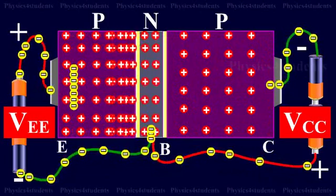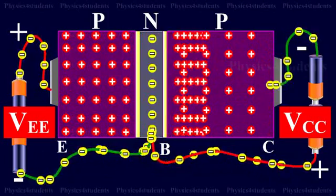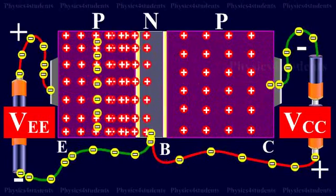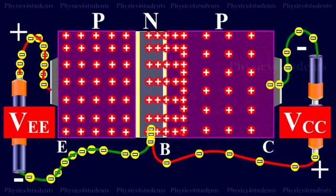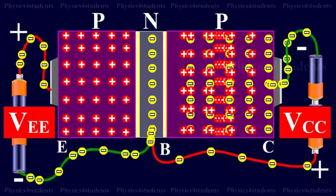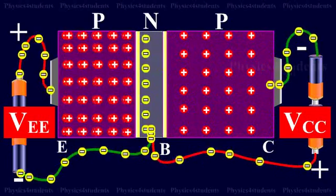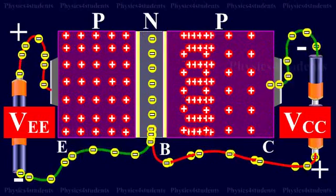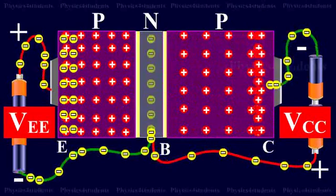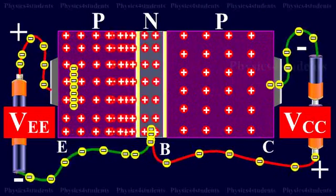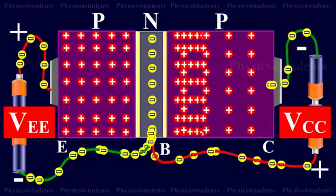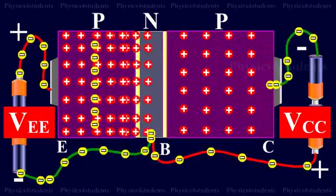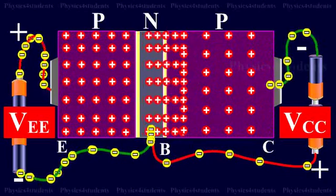The remaining holes which do not undergo recombination in the base reach the collector. These are neutralized by an equal number of electrons flowing from the negative terminal of the battery VCC into the collector. At the same time, an equal number of electrons flow from the negative terminal of VEE and reach the positive terminal of VCC. The flow of holes per second from the base to the collector gives rise to the collector current IC. In the external circuit, IC is due to the flow of electrons from the negative terminal of battery VCC into the collector.